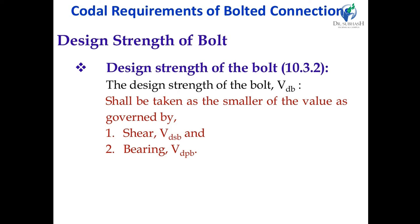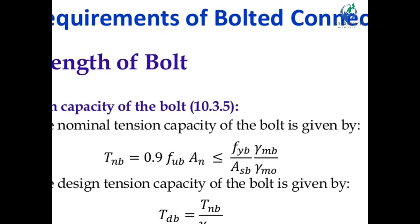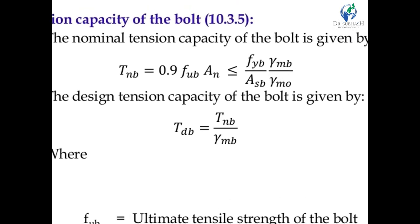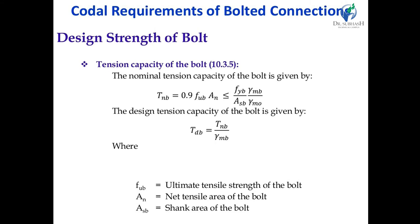Design strength of bolt VDB is given in clause 10.3.2. VDB shall be taken as the smaller of the two values: shear capacity VDSB and bearing capacity VDPB. So in designing the strength of bolt, we first calculate shear capacity, then bearing capacity, and whichever is smaller is taken as the design strength of bolt. For design strength due to tension, nominal tension capacity TNB = 0.9 × FUB × ANB, which should be less than or equal to FYB × ASB / partial safety factor. Design tension capacity TDB = TNB / γMB.